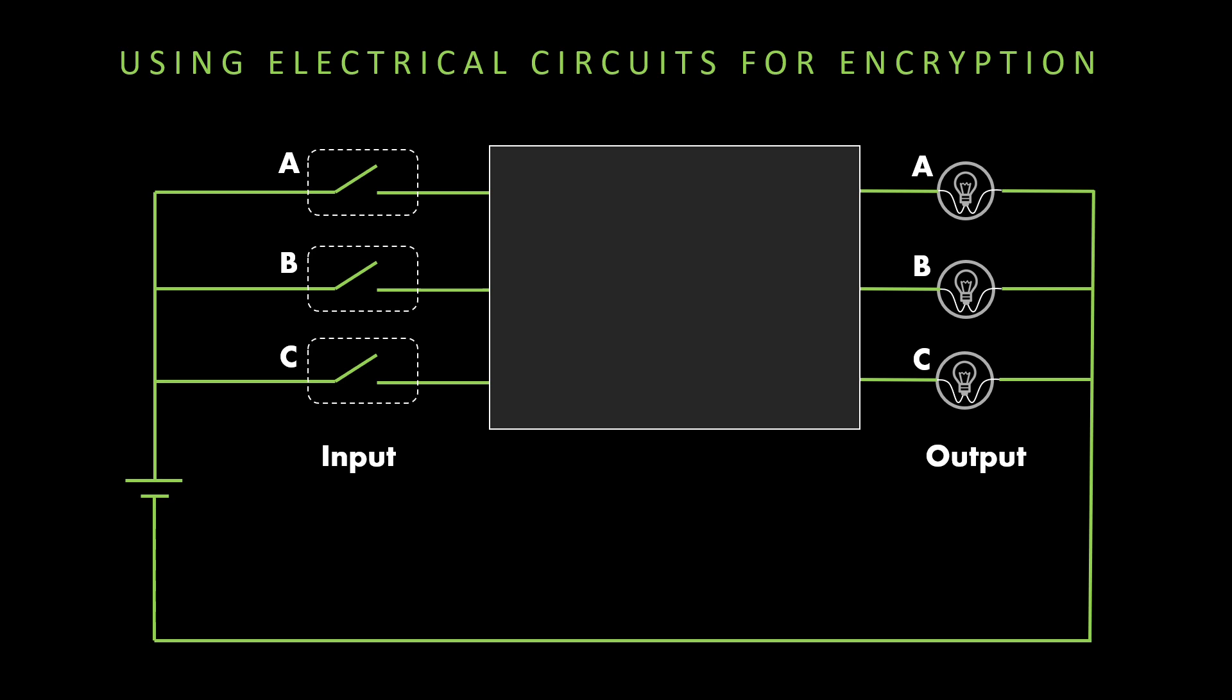Here is a very simple electrical circuit. It has three switches named A, B, and C - these switches mimic a keyboard for entering a message. We also have three light bulbs named A, B, and C. There is a mysterious black box wiring between the switches and the bulbs that I've hidden for now. Let us see what happens when I press the switch A - the bulb B is glowing, so A is converted to B.